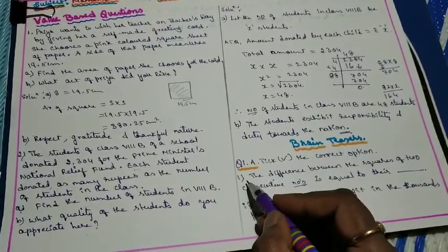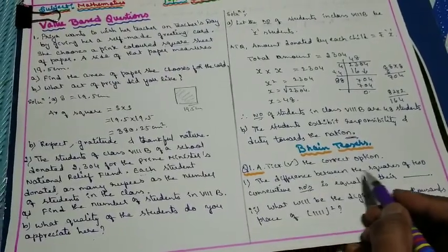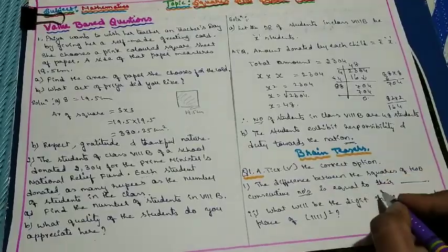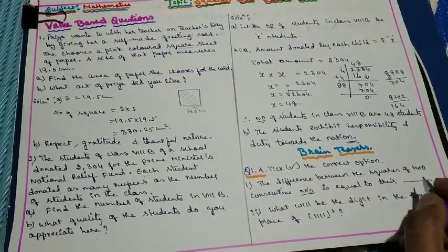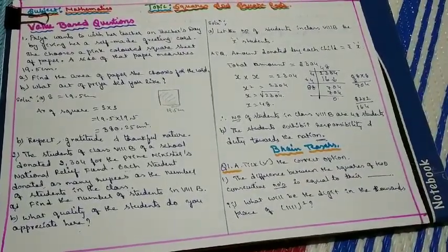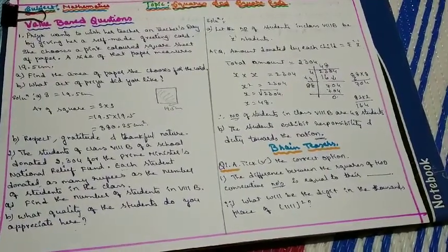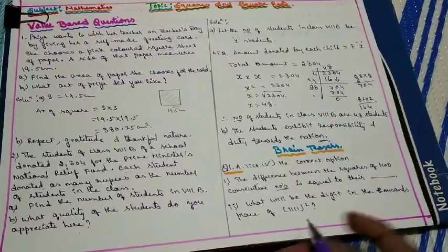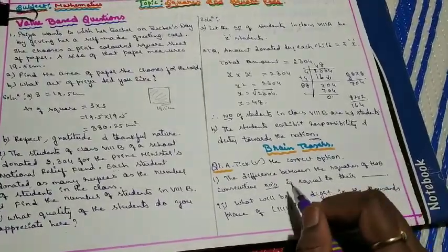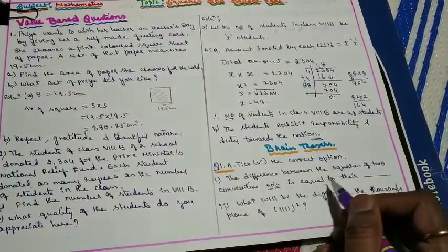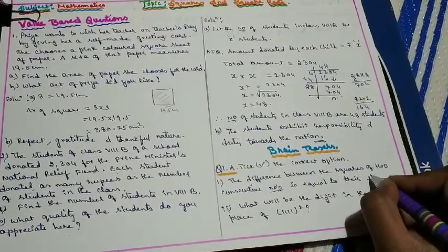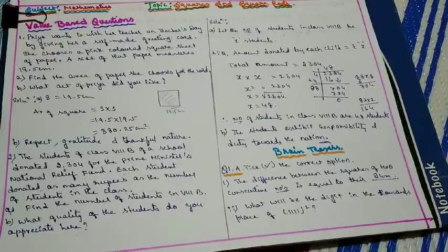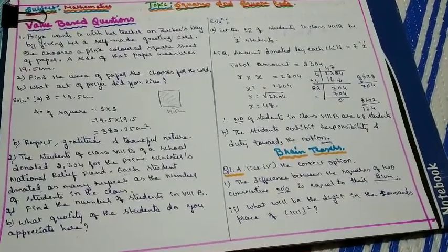Question 1: The difference between the squares of two consecutive numbers is equal to their dash. The options are sum, difference, product, and quotient. Whenever we find the difference between squares of two consecutive numbers, we always add their bases, so the answer is sum.